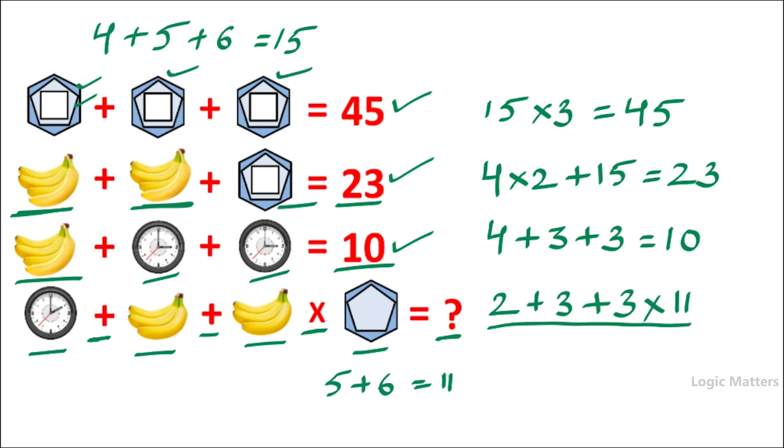If we clearly observe this, we have plus and multiplication. So if we consider order of operations, the first priority is always given to multiplication. So three times 11 is 33, right? And two plus three is nothing but five, and we should add. So five plus 33 is nothing but 38. The answer is 38.